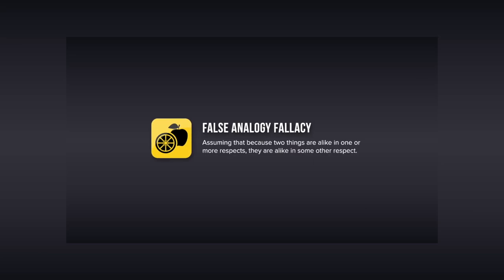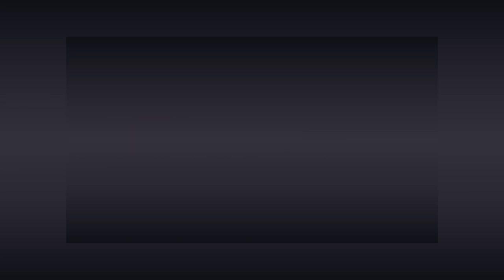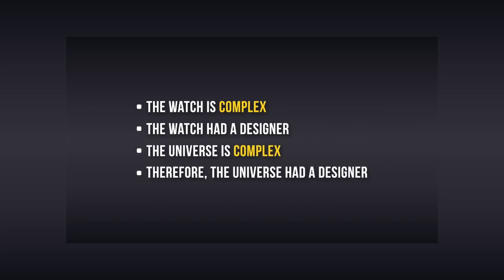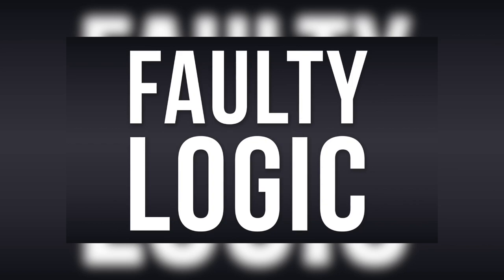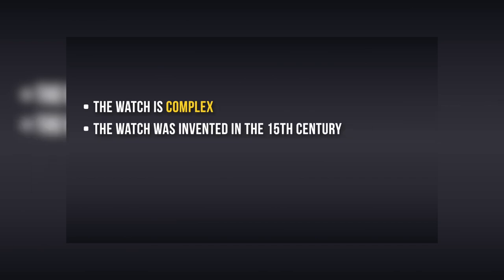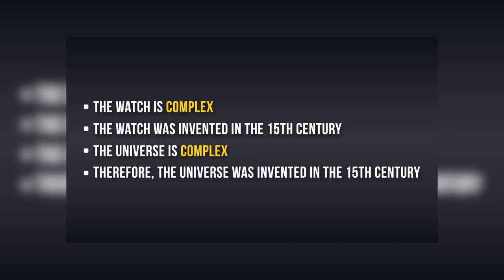First and foremost, and what single-handedly debunks the watchmaker argument is that it's a false analogy. An analogy is a comparison between things that have similar features for the purpose of explaining a principle or an idea, and in this case, Paley insists that a comparison can be made between the complexity of a watch and the complexity of the universe, which both imply that they had a designer. However, the last step is flawed because it concludes that because two things share one quality in common, that being complexity, they must also share another quality in common, a designer, when this simply cannot be logically concluded. If it could, then by using the same faulty logic, countless other absurd qualities could be attributed to the universe. For example, the watch is complex, the watch was invented in the 15th century. The universe is complex, therefore the universe was invented in the 15th century.